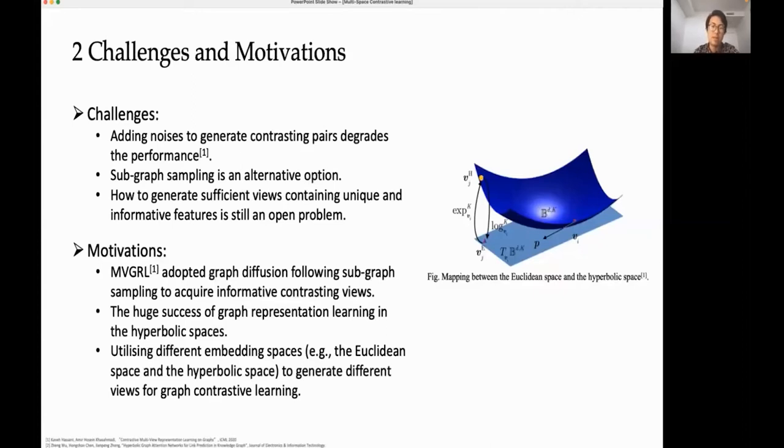Therefore, it's always a challenging problem to design effective ways to generate contrasting pairs. To avoid introducing too much noise, many researchers adopt subgraph sampling to generate positive samples. The intuition is that each subgraph has a unique focus on certain aspects of graph semantics, and different subgraphs or local structures can hint at the full semantics carried on the graph.